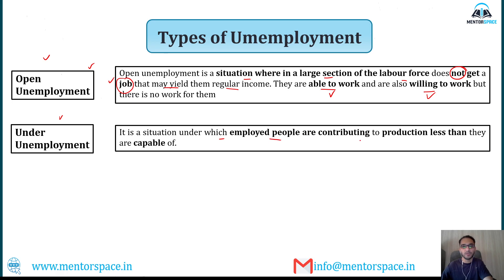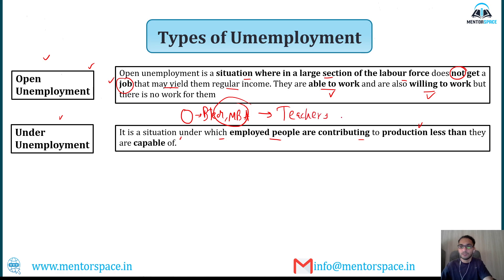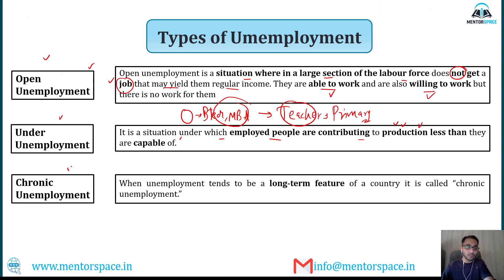Under-employment is a situation where employed people are contributing to production less than they are capable of. For example, a person who has done B.Tech or an MBA is employed as a teacher in a primary school — their contribution is less than their potential. Chronic unemployment occurs when unemployment tends to be a long-term feature of a country, meaning people remain unemployed for a long period of time.